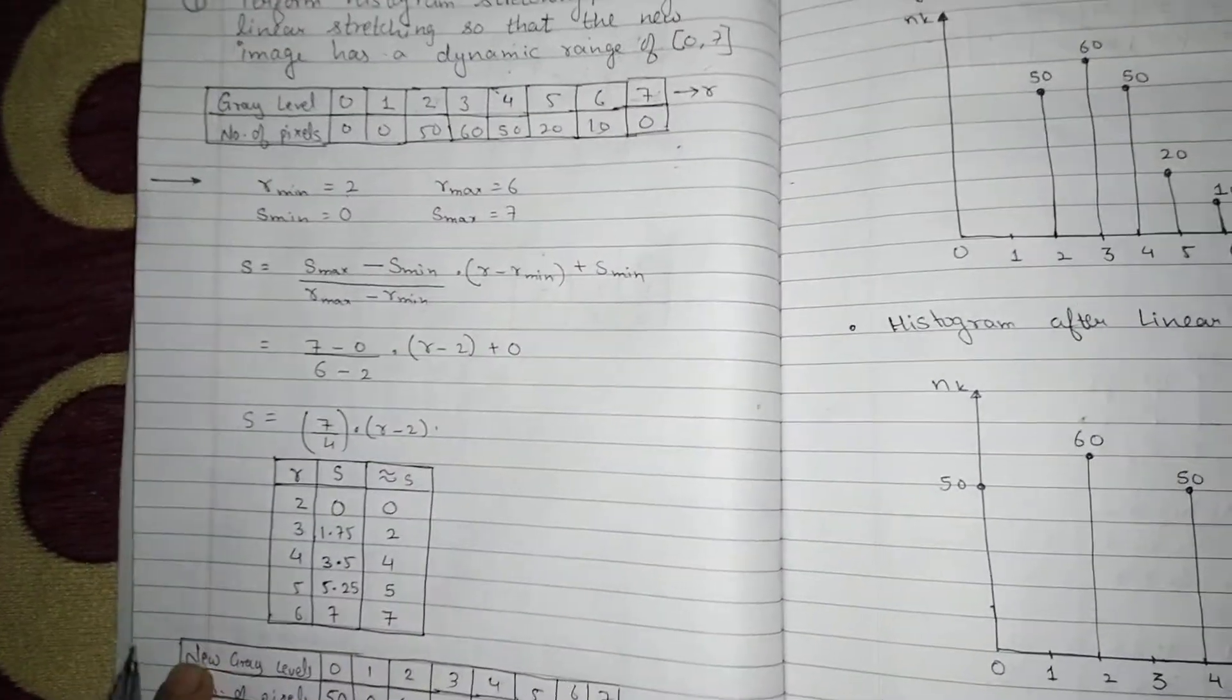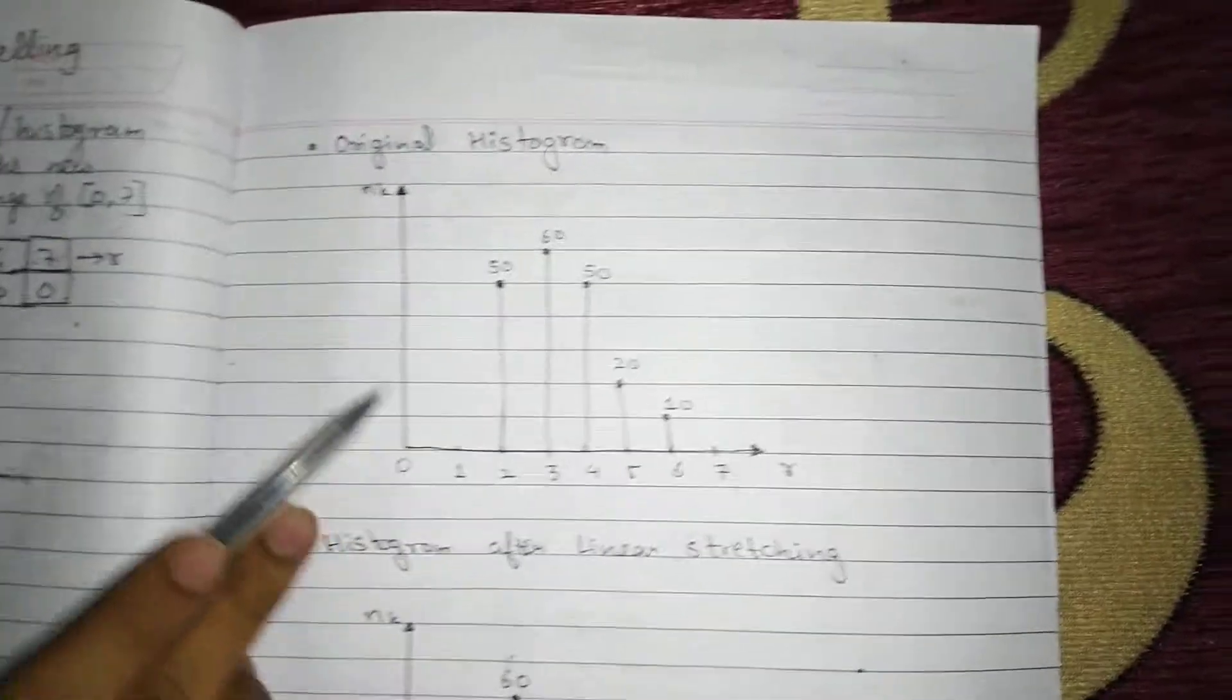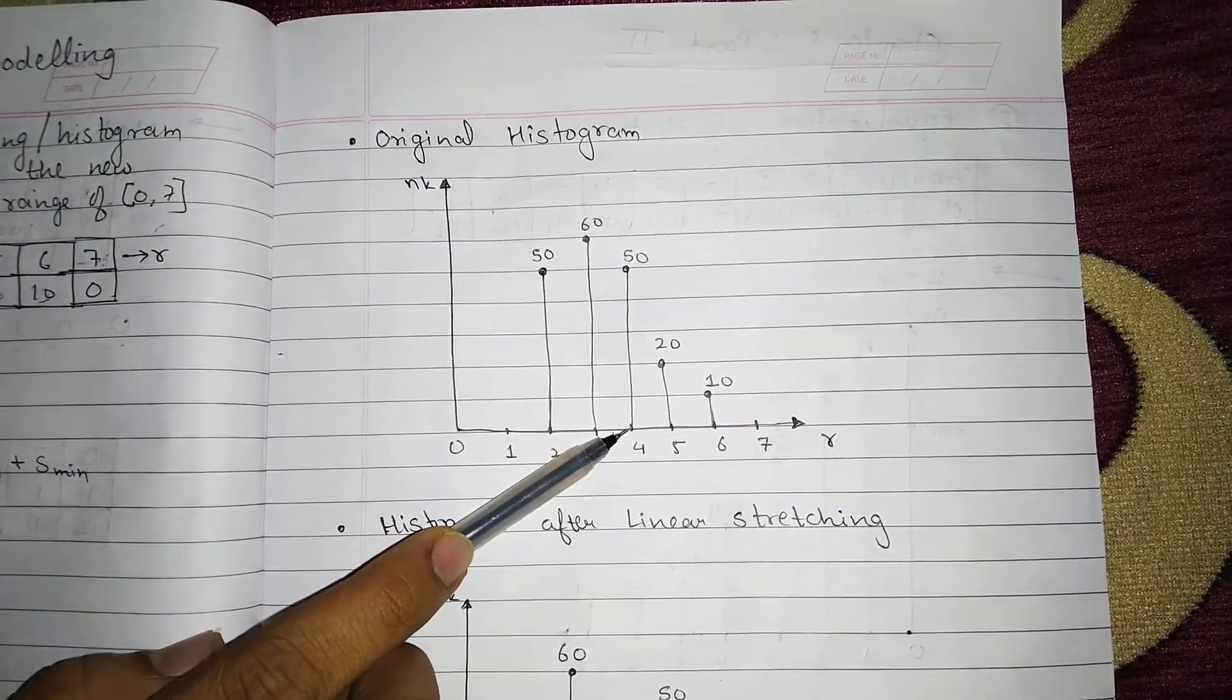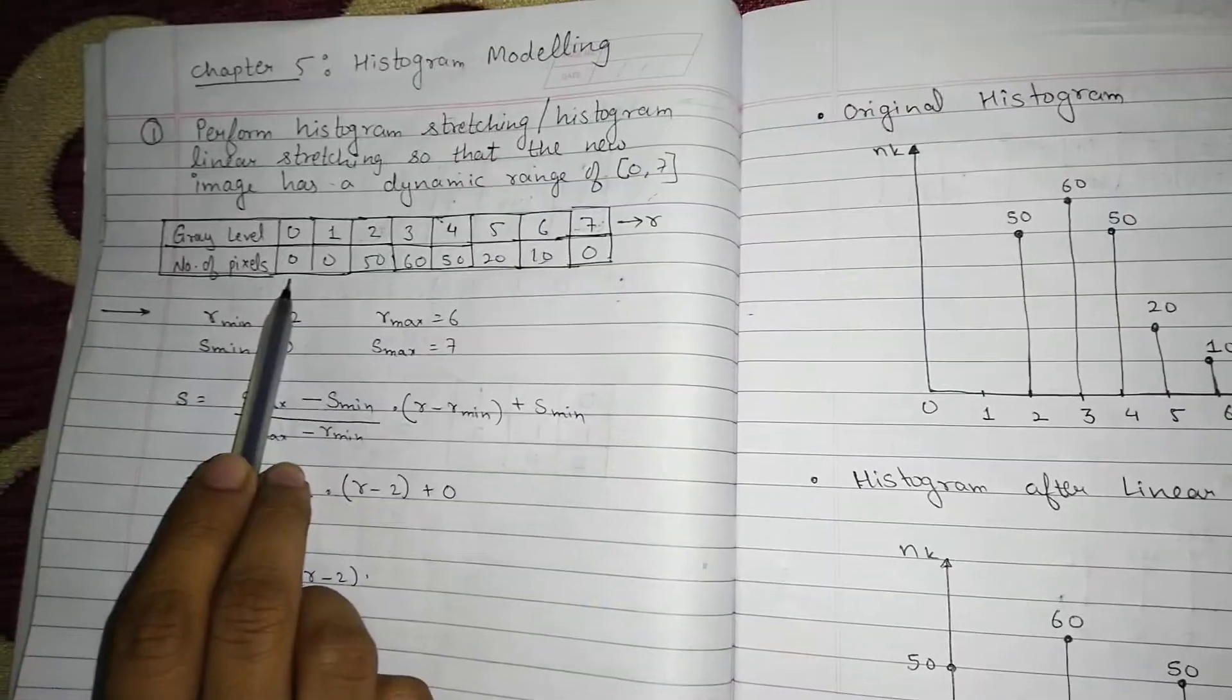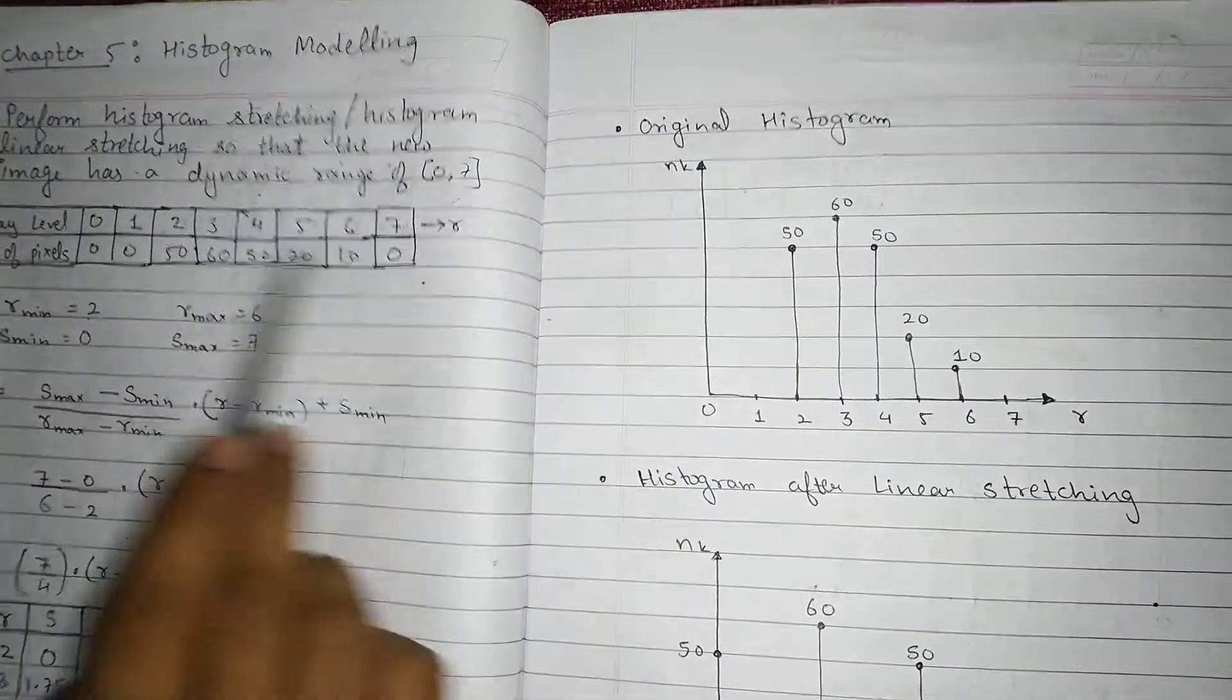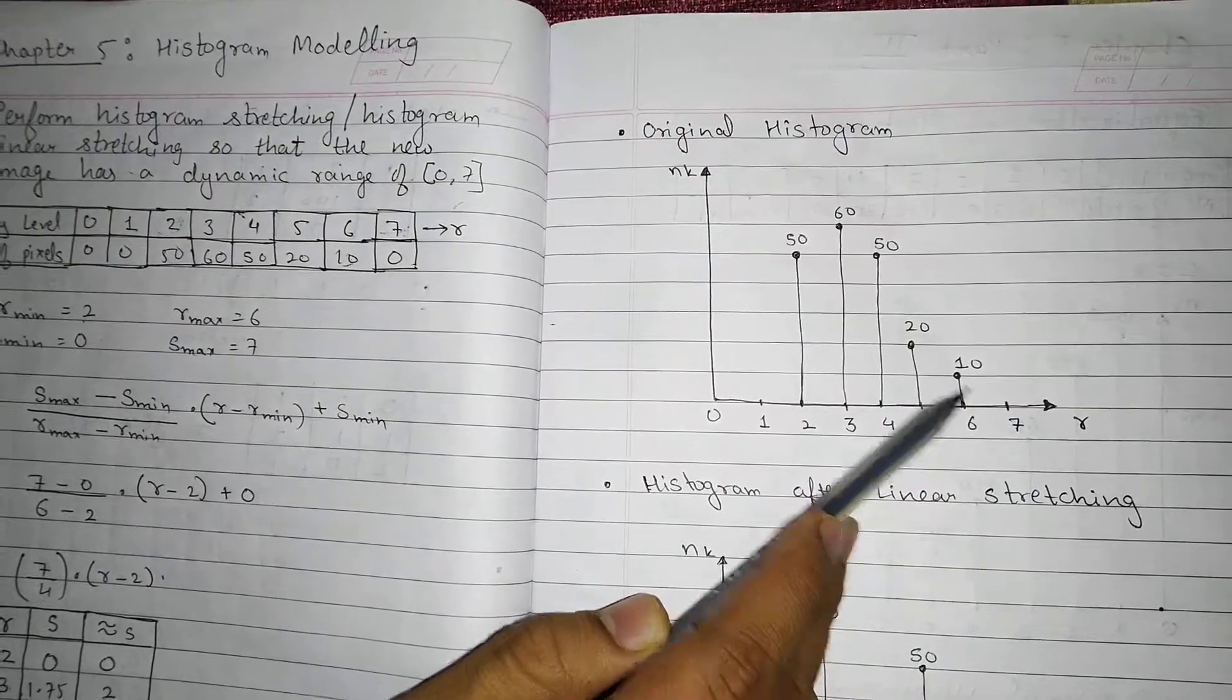Now if I have to plot a histogram of this because I have to linear stretch it. So this is the original histogram, the histogram given in question. 0 was 0, 1 was 0, 2 was 50, 3 was 60, 4 was 50, 5 was 20, 6 was 10, 7 was 0.